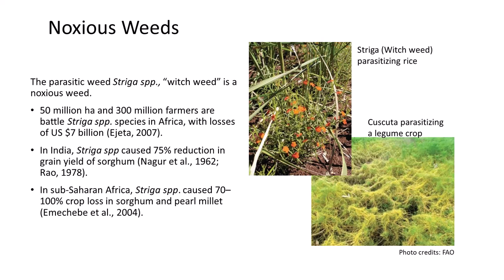Striga is a parasitic weed and pathogen of cereal crops in sub-Saharan Africa. Striga species parasitize most cereals, including maize, millet, sorghum, and rice. Germination only occurs in the presence of a suitable host. Following germination, Striga attaches to the host and siphons out nutrients. 50 million hectares and 300 million farmers are affected by this weed in Africa, with losses totaling 7 billion U.S. dollars.